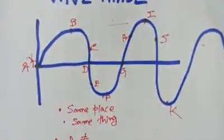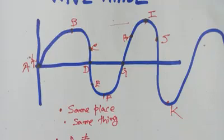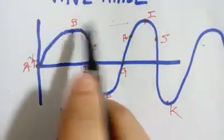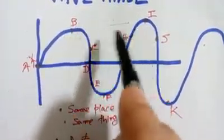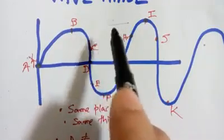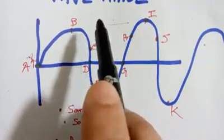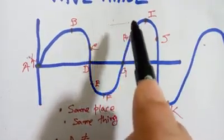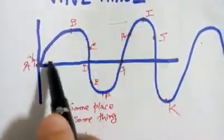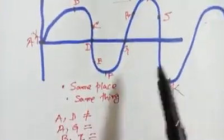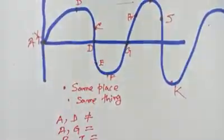Using this definition of in phase and out of phase, we can restate what wavelength means. Wavelength is equal to the distance between two consecutive locations which are in phase. For example, A and G are in phase, so the distance between them is the wavelength.